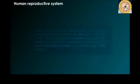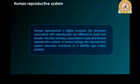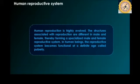Now focusing on the human reproductive system — human reproduction is highly evolved. The structures associated with reproduction are different in males and females, thereby forming a specialized male and female reproductive system. In humans, the reproductive system becomes functional at a definite age known as the puberty age.